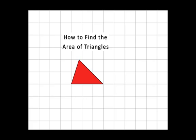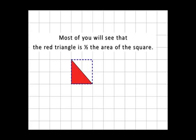So today we're going to look at how to find the area of triangles. In the last movie we saw that right triangles were about half the area, or exactly half the area, of a square that surrounds them.